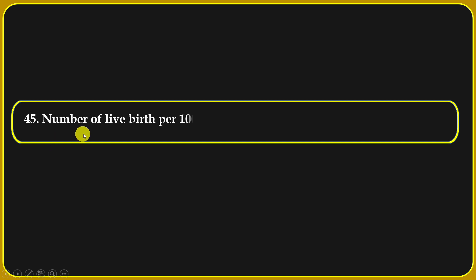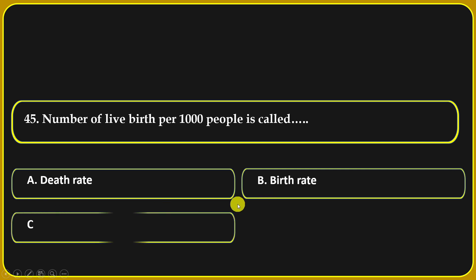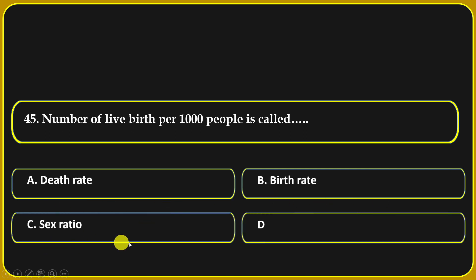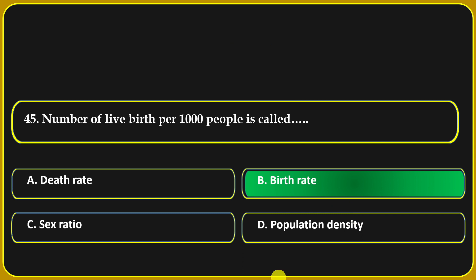The number of live births per thousand people is called: death rate, birth rate, sex ratio, or population density. Birth rate is the right answer.